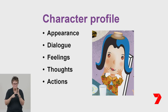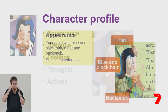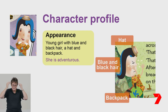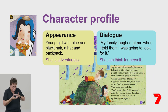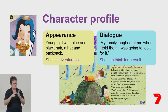Let's create a profile for Oshii. Our character profile will include notes on her appearance, dialogue, feelings, thoughts, and actions. We can use the illustrations to describe Oshii's appearance — she's a young girl with blue and black hair who wears a hat and carries a backpack, which could show she is ready for adventure. For dialogue, she says 'my family laughed at me when I told them I was going to look for it,' which shows she has determination and can think for herself, even if people tease her.